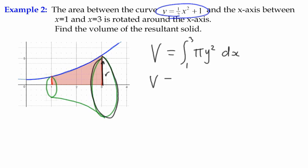Substituting in the information that we've got, I tend to keep pi out as a constant term so it's not getting all clogged up in the integration process. The function y is a half x squared plus one and we have to square that, and that's our integration problem.